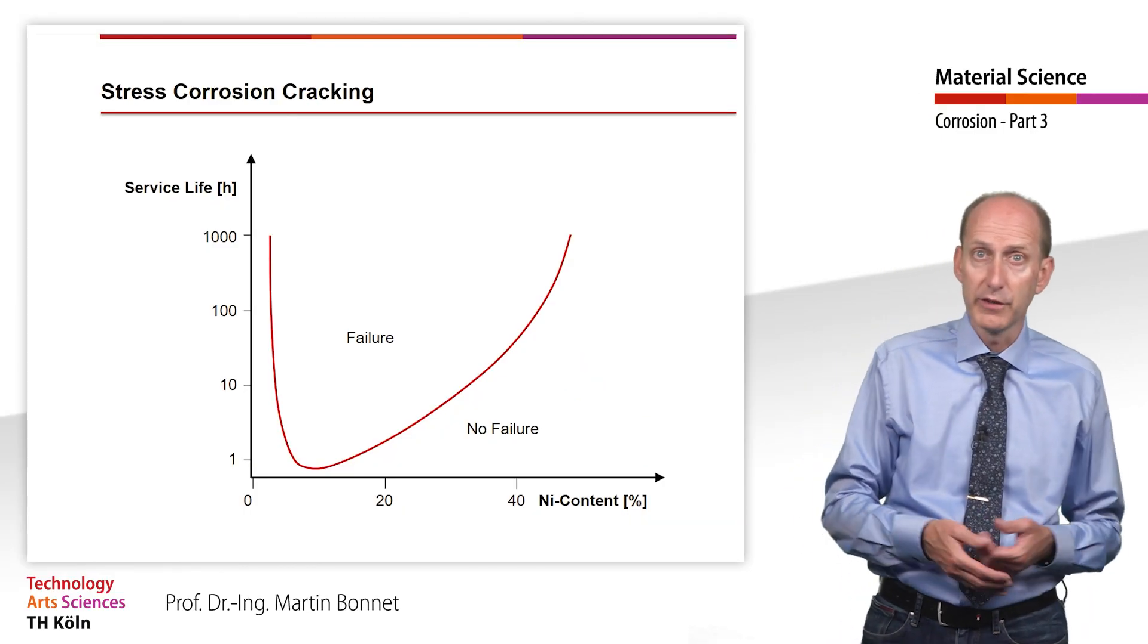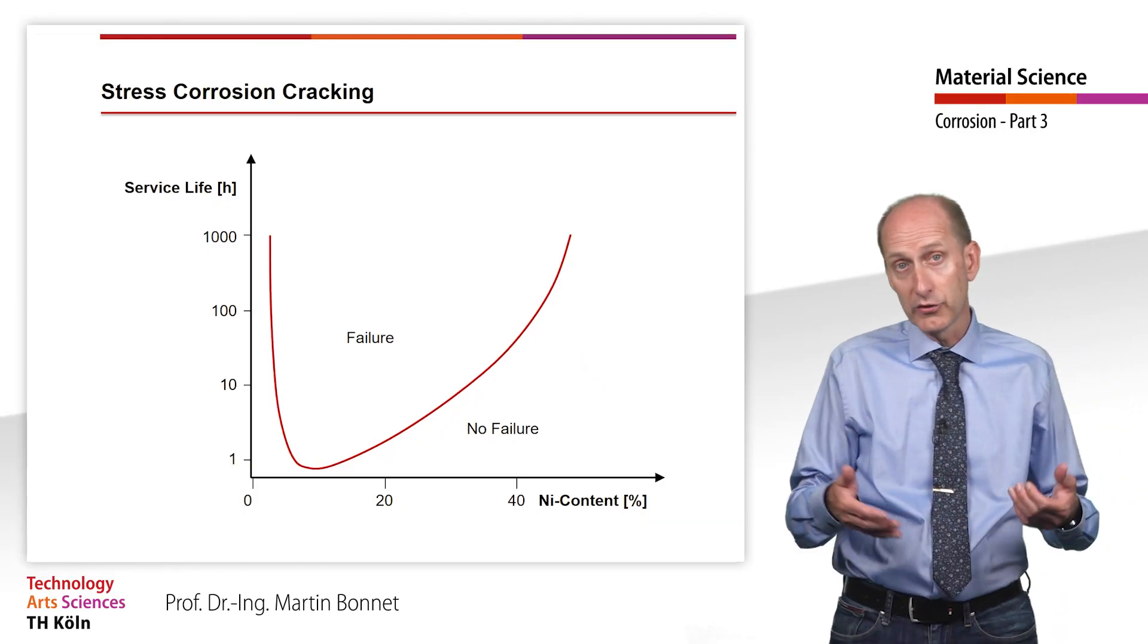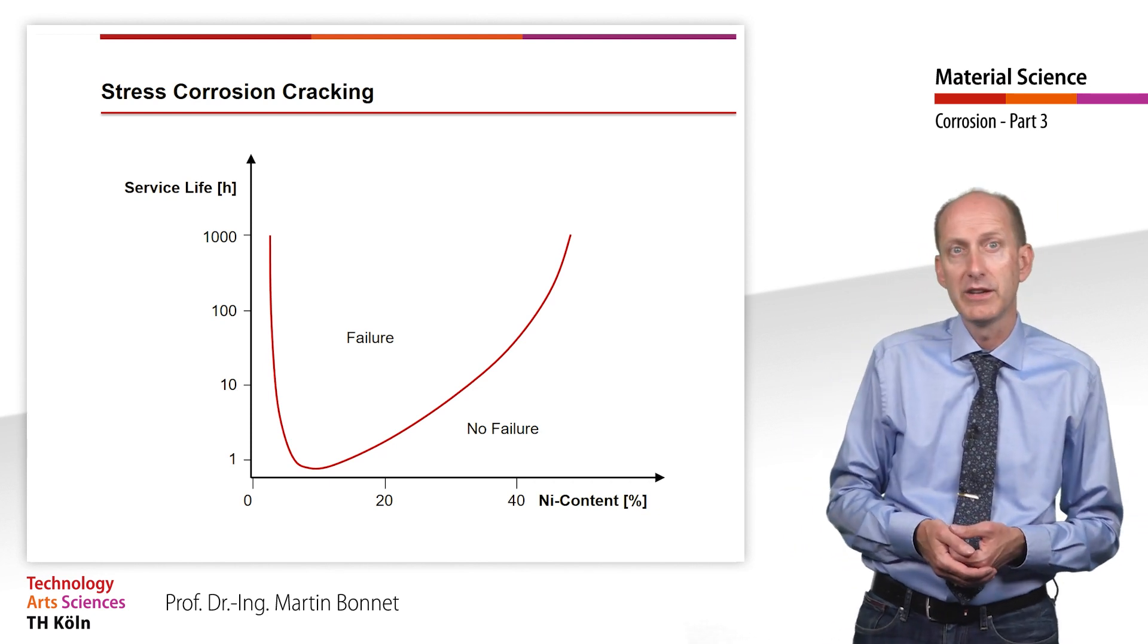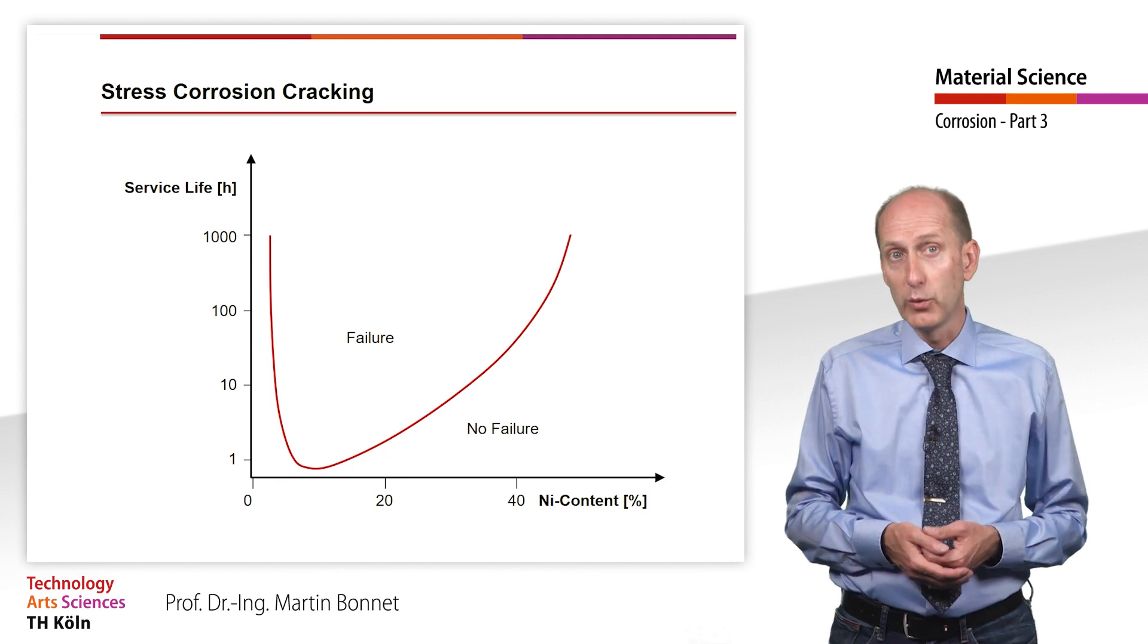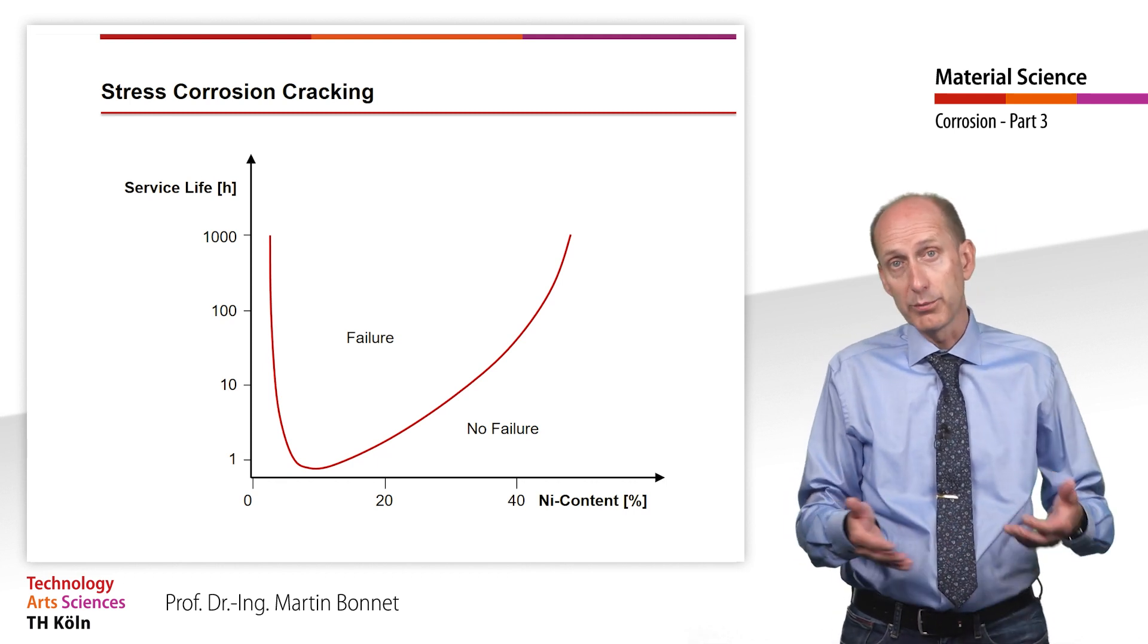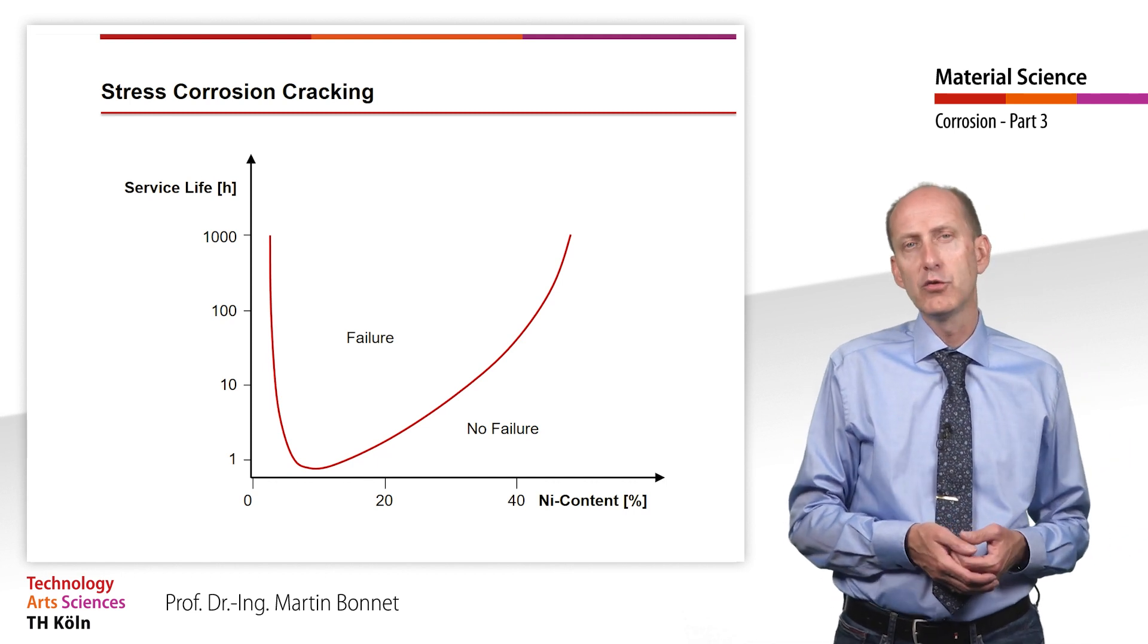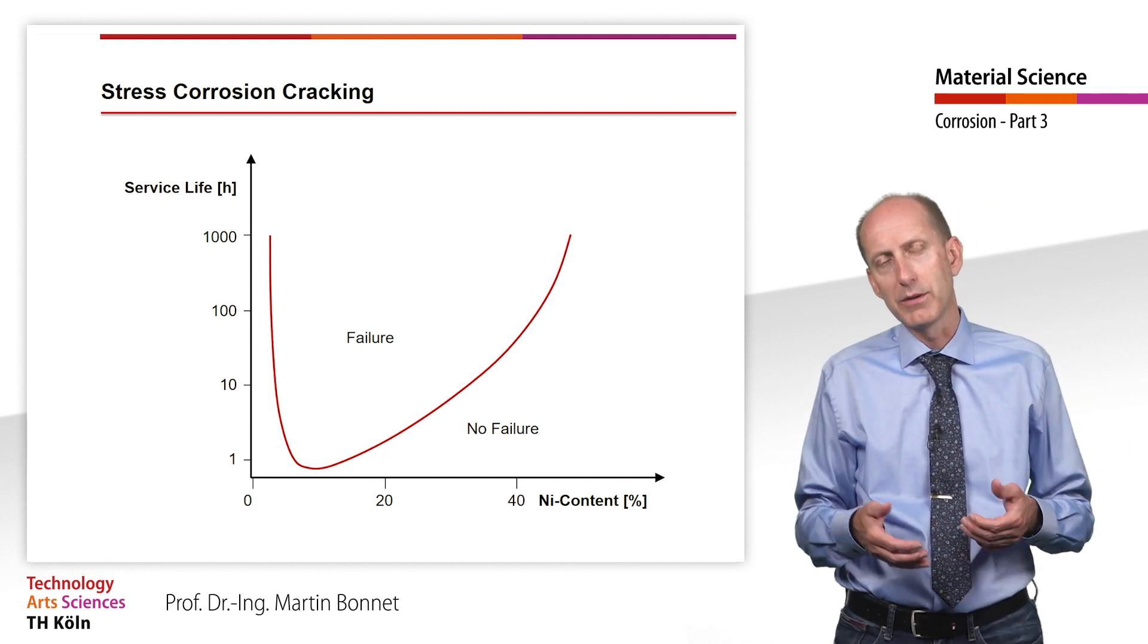As an alternative for applications where certain stresses cannot be avoided and also a certain chlorine concentration is given in the medium, we can either work without nickel at all, thus obtaining a ferritic material, or we can significantly increase the nickel content to for example 40%.